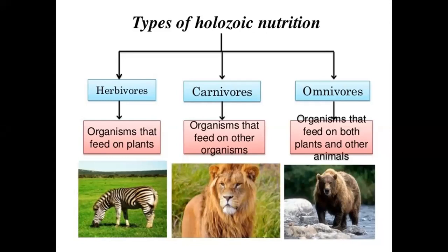Those who eat dead and decaying solid food — in some books scavengers and detritivores are written as types of holozoic animals, but majorly scavengers and detritivores are considered separate. Herbivores are those organisms that eat herbs. Carnivores are those organisms that eat animals. And omnivores are those that feed on both plants as well as animals.